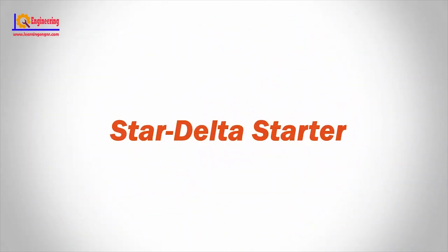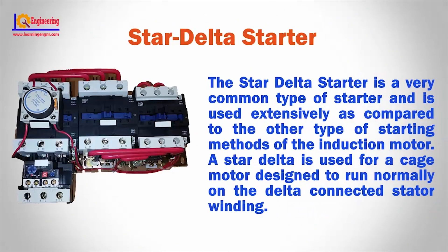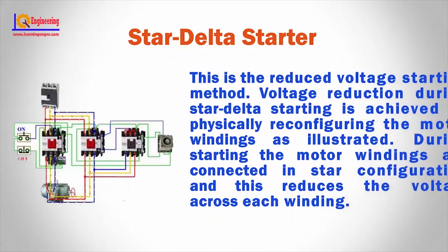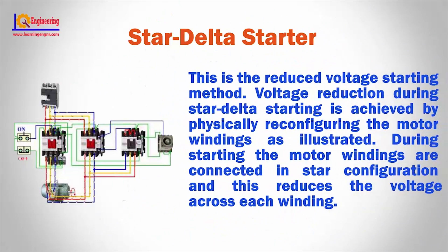Star delta starter. The star delta starter is a very common type of starter and is used extensively compared to other starting methods of the induction motor. A star delta starter is used for a cage motor designed to run normally on the delta connected stator winding. This is the reduced voltage starting method. Voltage reduction during star delta starting is achieved by physically reconfiguring the motor windings as illustrated.